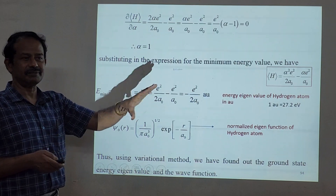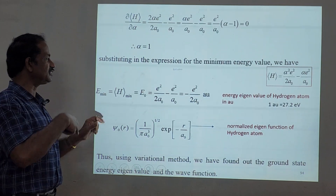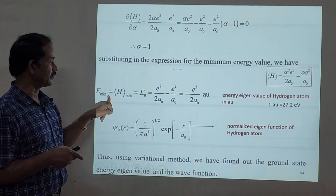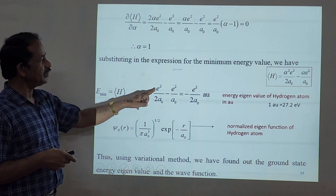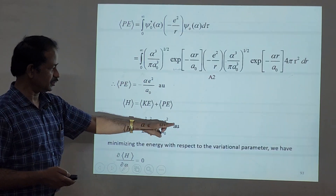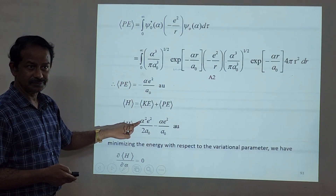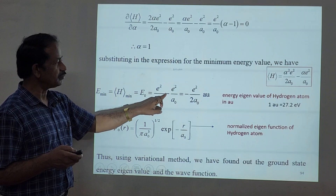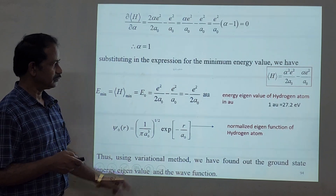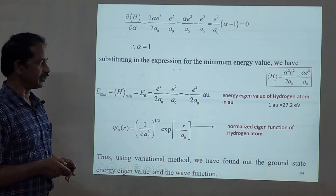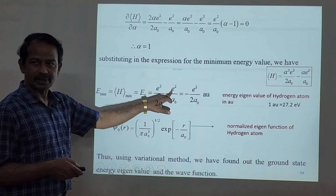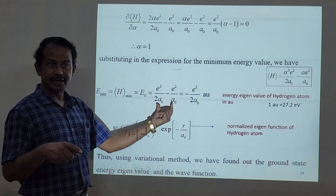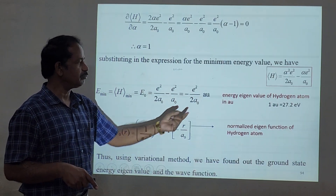We found α = 1. Substituting back into the total energy expression: E = (1)²e²/(2a₀) - (1)e²/a₀ = e²/(2a₀) - e²/a₀ = -e²/(2a₀). That is, (1/2 - 1) = -1/2, so E_minimum = -e²/(2a₀).